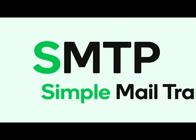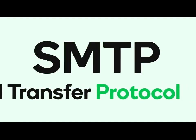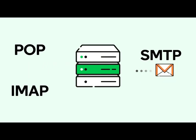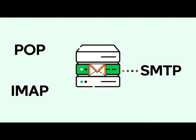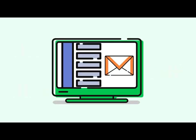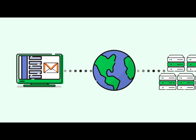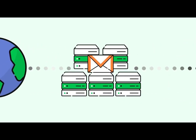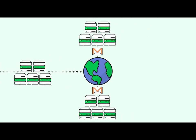SMTP stands for Simple Mail Transfer Protocol. While POP and IMAP are protocols that allow you to retrieve email from a mail server, SMTP is the protocol that allows you to send email to a mail server. Specifically, the SMTP protocol is used to send email from an email client to your email provider's mail server and to send email between two mail servers on the Internet.